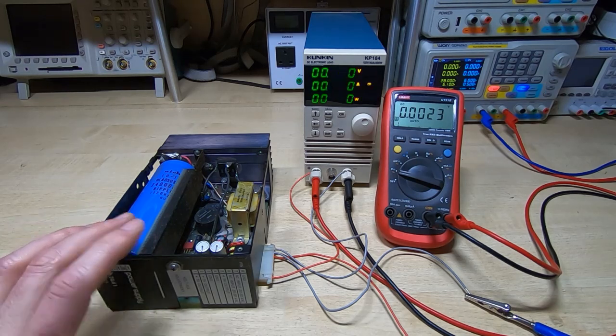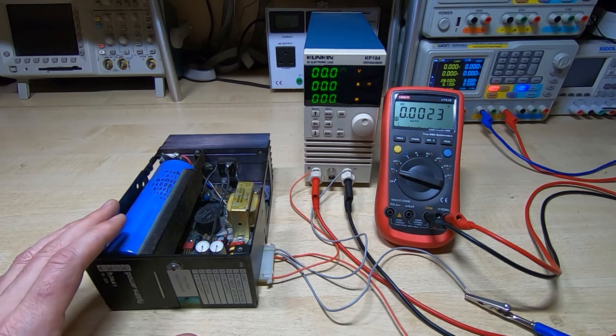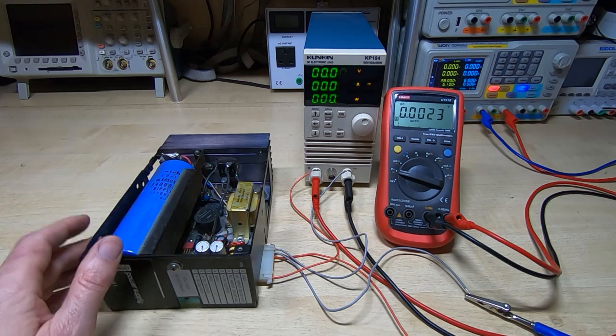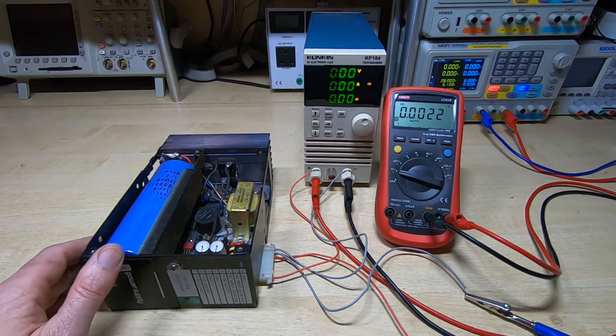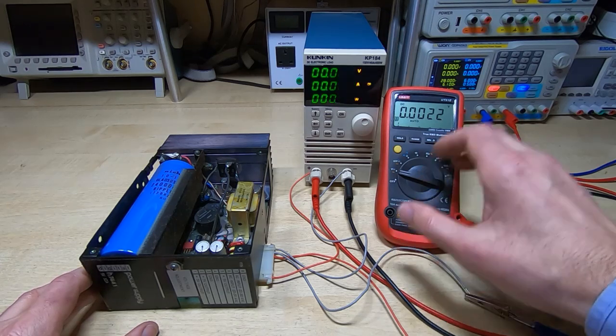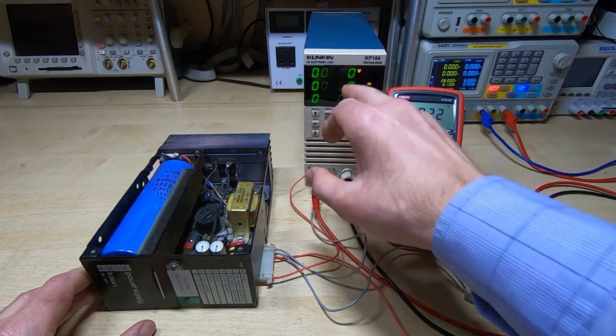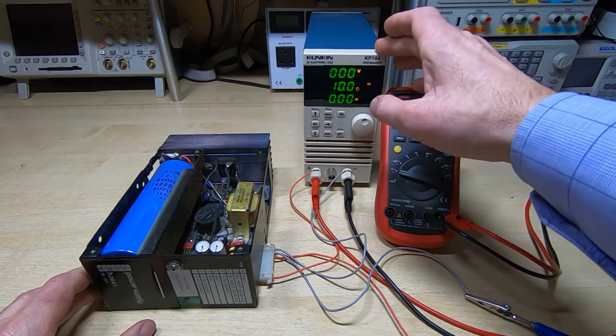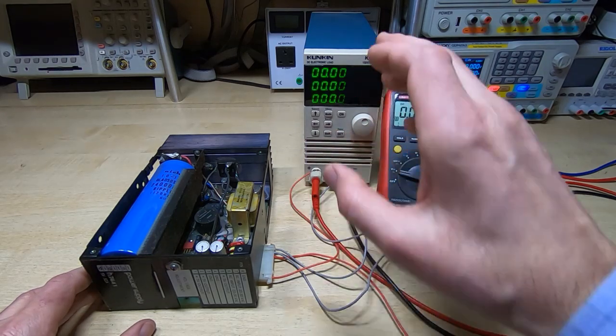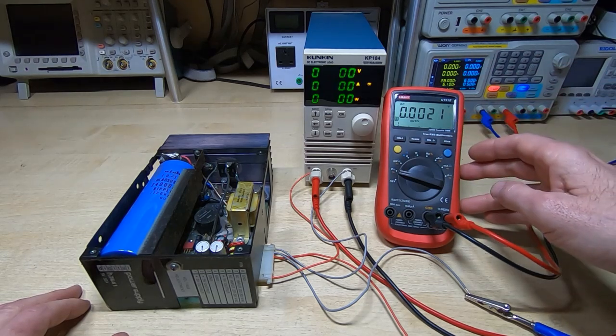The higher you go, the less current it's going to draw from your bench supply. If you want to run it to full power, you might want to increase that voltage a bit. I've got the multimeter connected across the output, the bench supply set, and the Kunkun KP184 electronic load connected to the output set at 10 ohms constant resistance. We should get around 5 volts on the output.